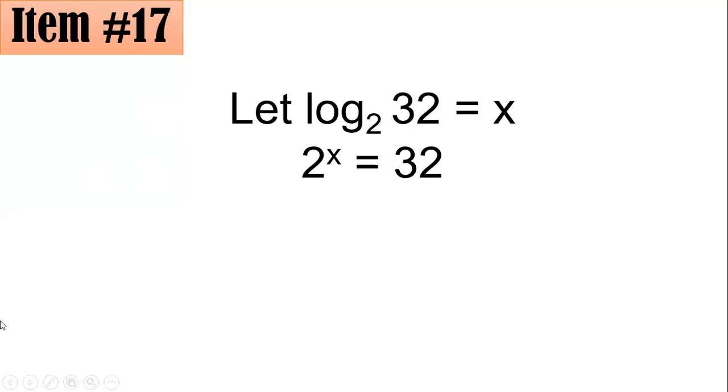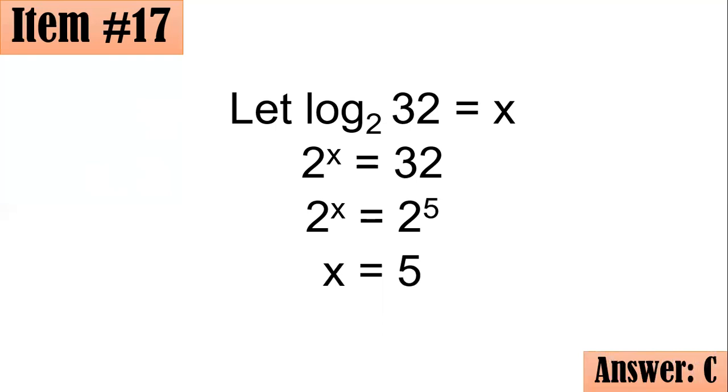So, we have 2 raised to x equals 32. But we know that 32 could also be expressed as a base 2, as 2 to the fifth. That's why we have 2 raised to x equals 2 raised to 5. And remember, since we have 2 expressions having the same base, and they are equal, then we could also say that their exponents are also equal. Hence, the value of x is 5, letter C.